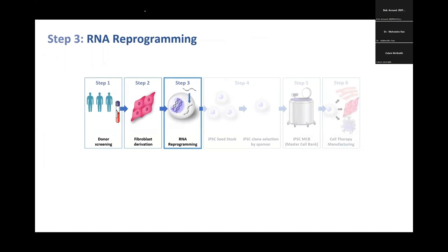Now you've got tissue processed and stored — the EMEA requires you to store it for 30 years and the FDA requires 10 to 15 years. You also have extra vials to start the actual RNA reprogramming, and vials for test runs if using a new process. The fibroblasts are not collected in a GMP suite — they're collected in a clean room under Good Tissue Collection Practices (GTCP) — but the most critical piece is having a clear chain of custody between the donor, the fibroblasts, and the storage, with appropriate documentation.